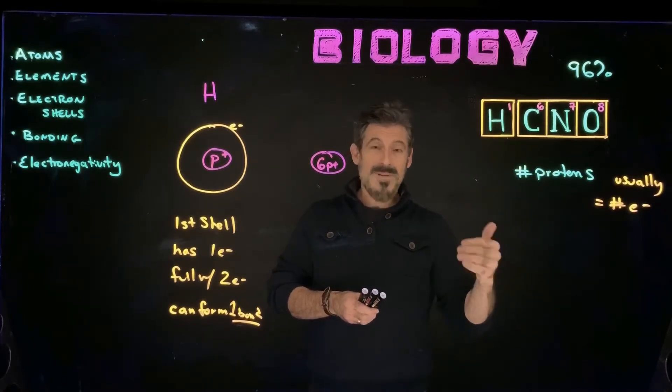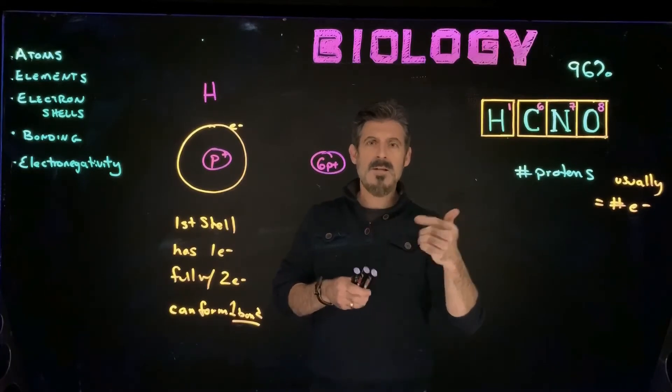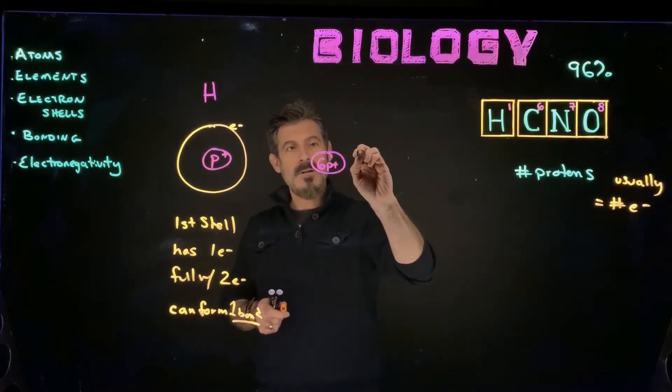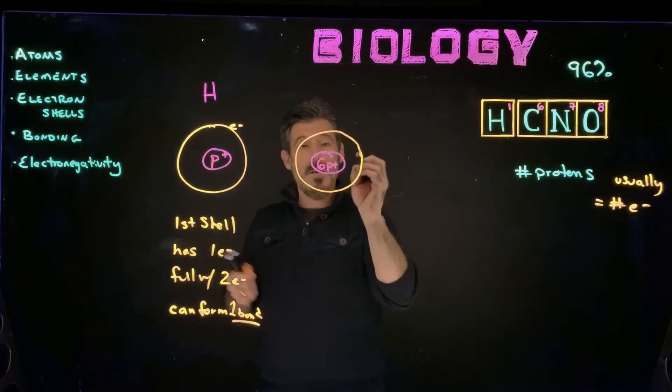And if it has different numbers of neutrons, it would be an isotope, but still the same element. But if the number of protons would have changed, it would then become a different element. So the protons are the thing that fixes the characteristic of this particular element, or of all elements.